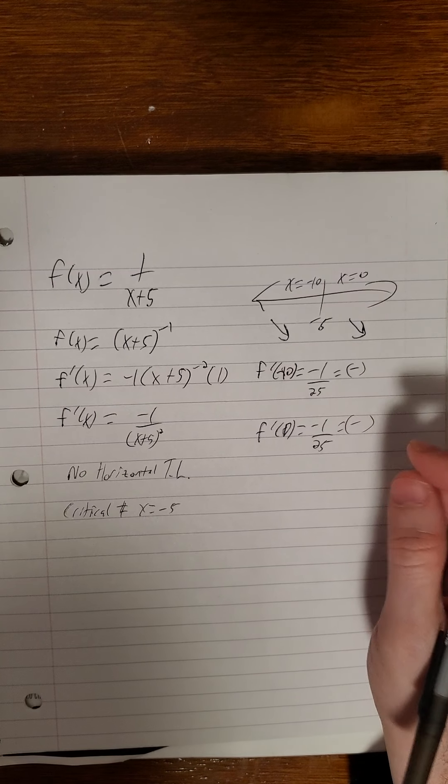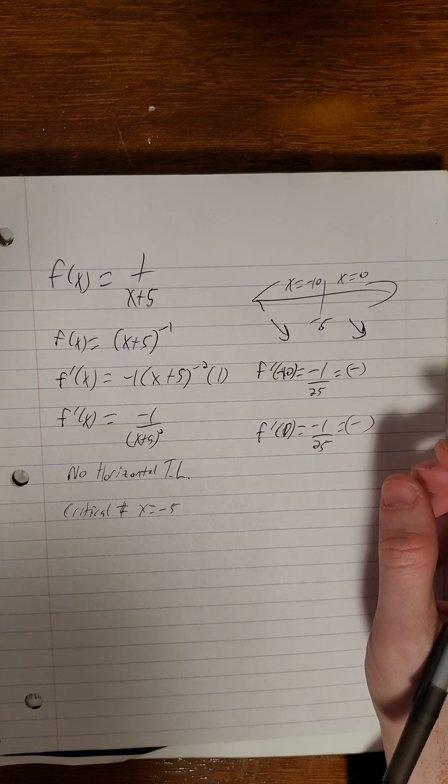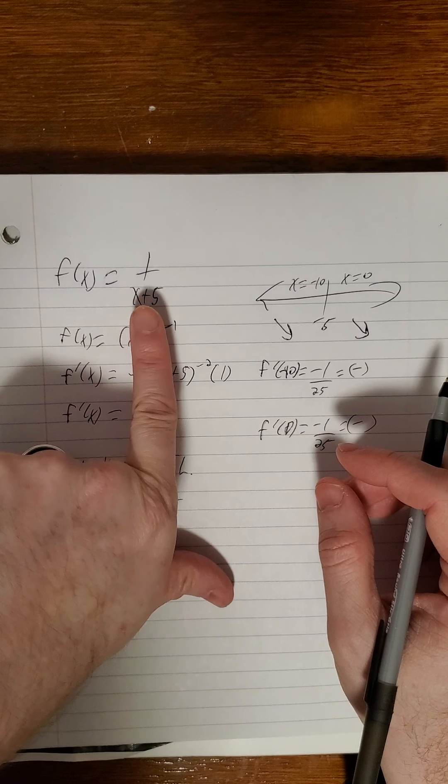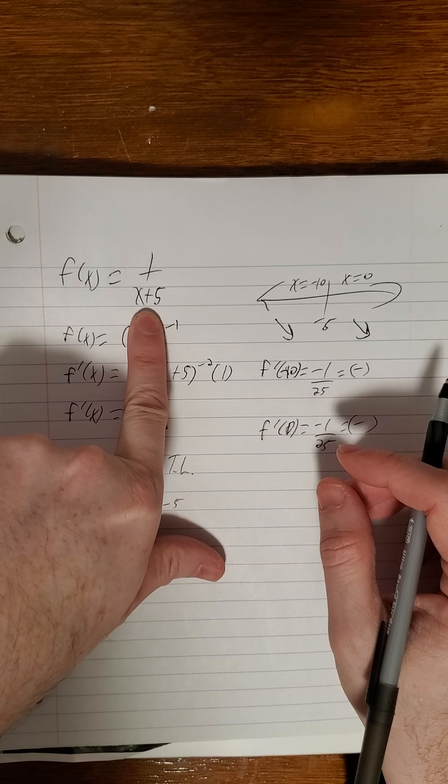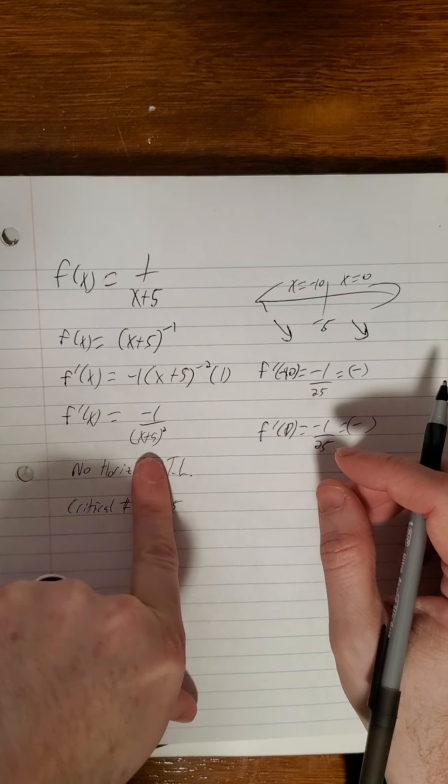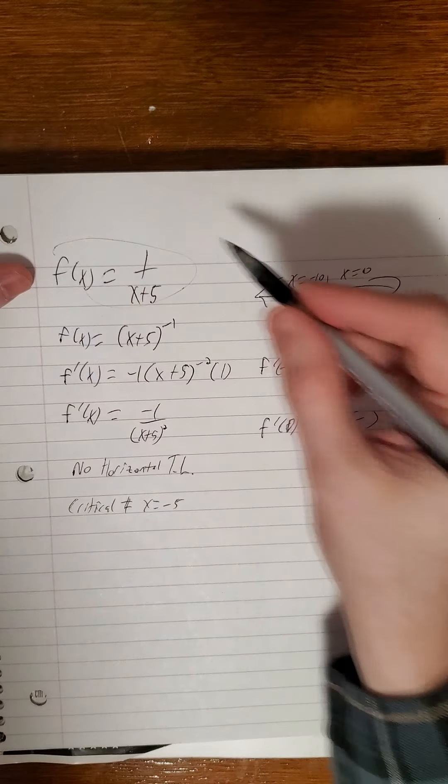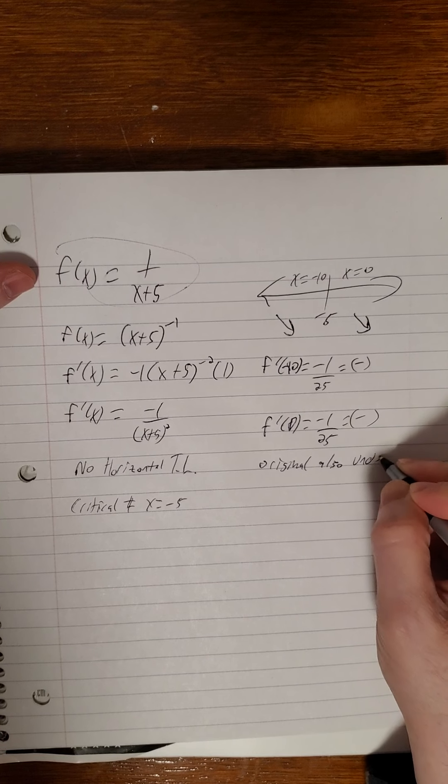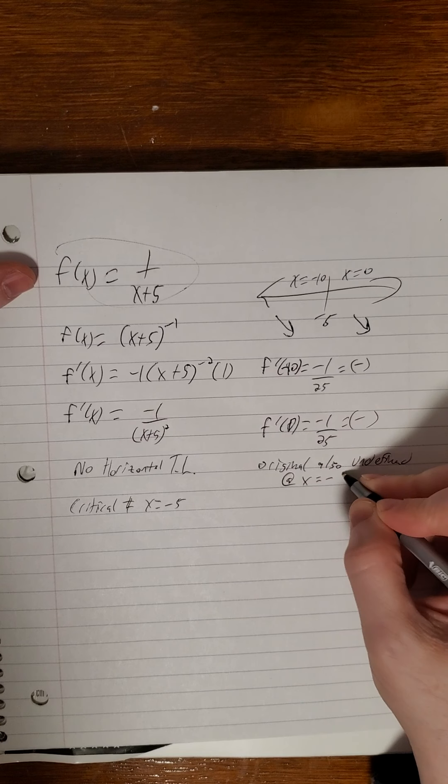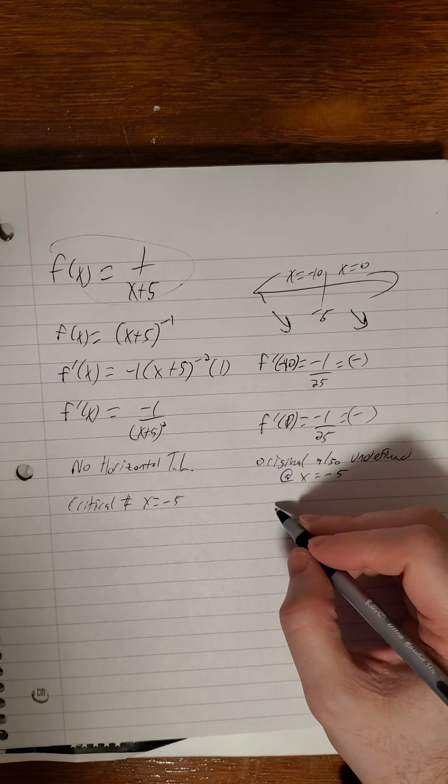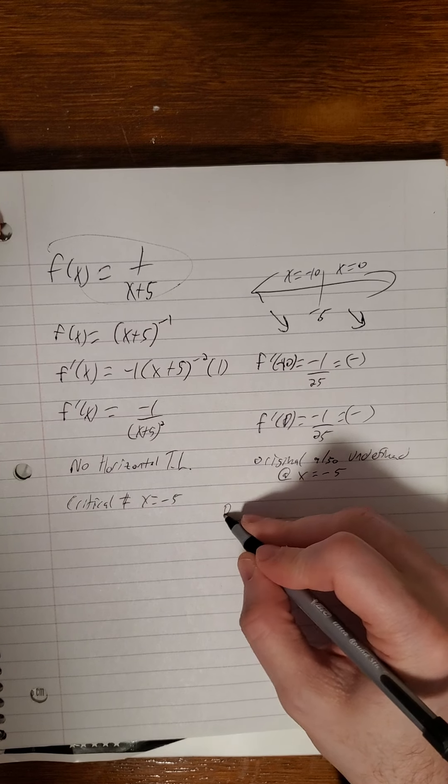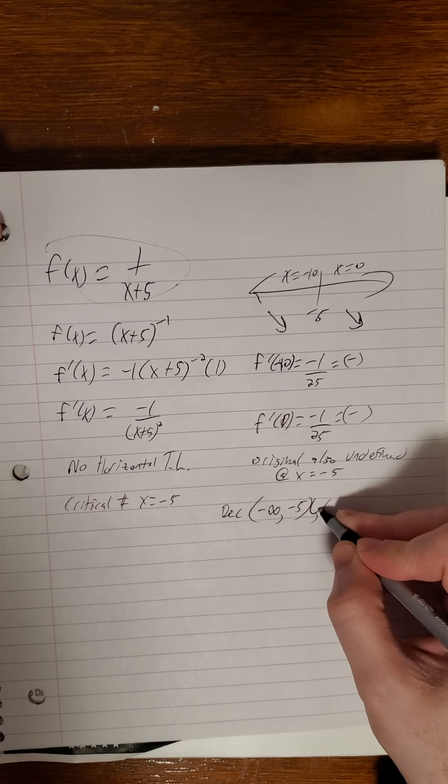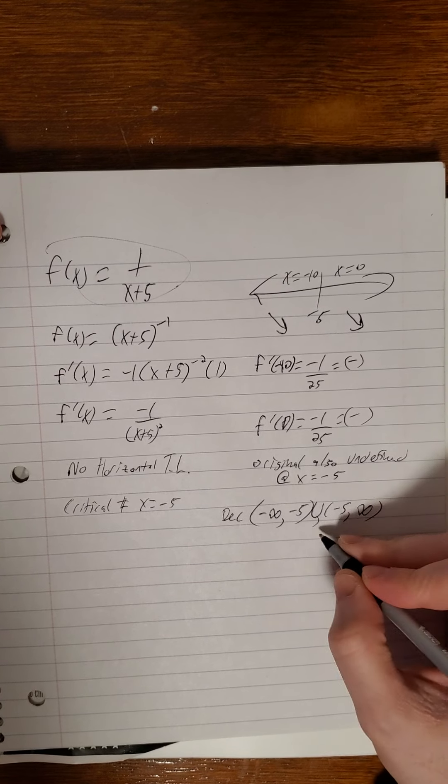This one, though, for sure, I can't say decreasing on negative infinity to infinity. If you take a look at the original function, this one is undefined in the original function as well at negative 5, not just its derivative. The original is also undefined. Yeah, the point x equals negative 5. So this one, we would definitely do the union thing when describing the behavior of this function. So this is decreasing on negative infinity up to but not including negative 5, and we'll union that up with negative 5 up to infinity.